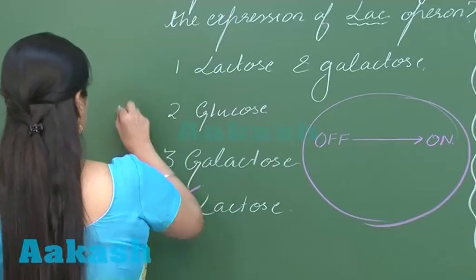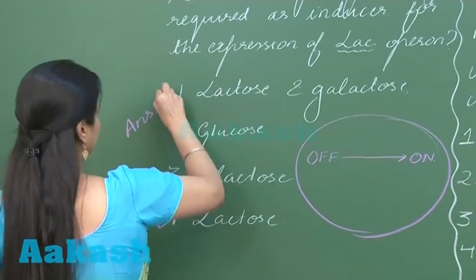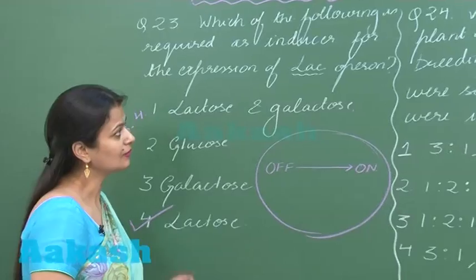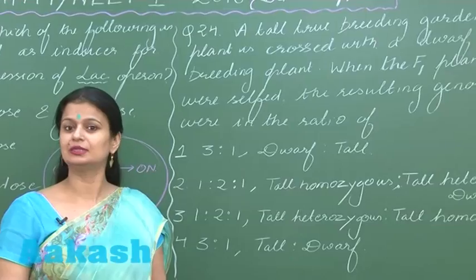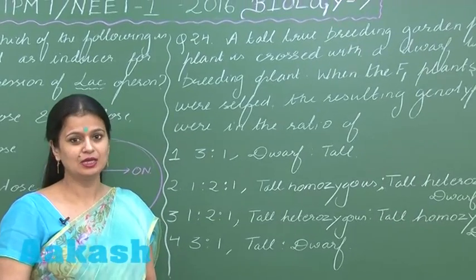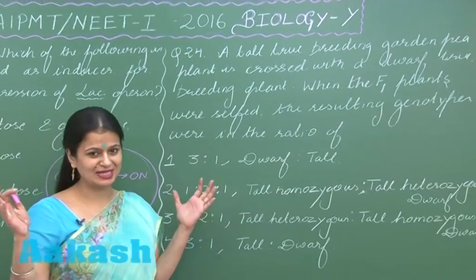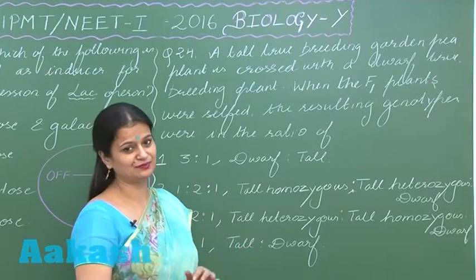Question number 24, a very simple question of genetics related with the monohybrid cross. So all of you might be knowing that in the case of the monohybrid cross, what is the genotypic ratio?